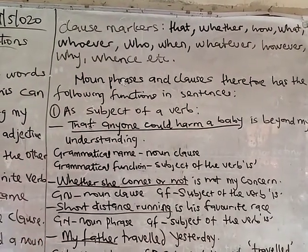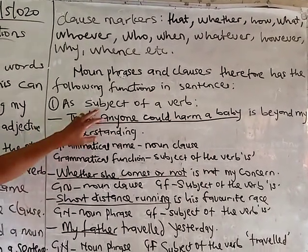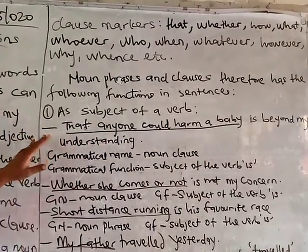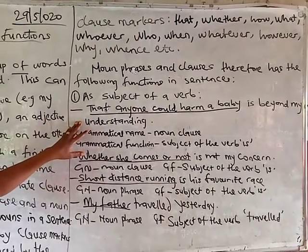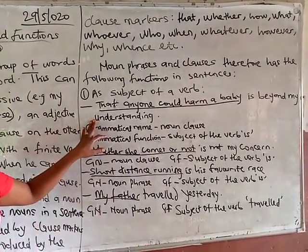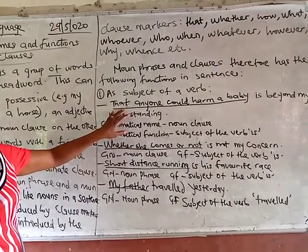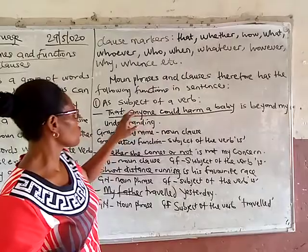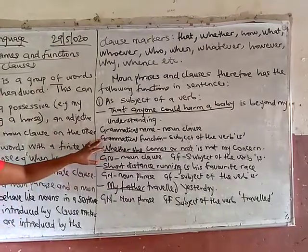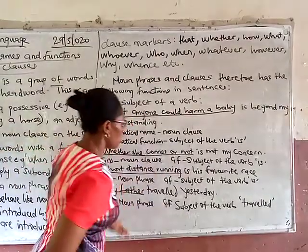Noun phrases and clauses have the following functions in sentences. The first one is subject of a verb — a noun phrase or noun clause can act as the subject of a verb in a sentence. For instance: 'that anyone who has a baby is beyond my understanding.' This is a noun clause introduced by the clause marker 'that', and it is the subject of the verb 'is' because it comes immediately before the verb. The grammatical name is noun clause; the grammatical function is subject of the verb 'is'.